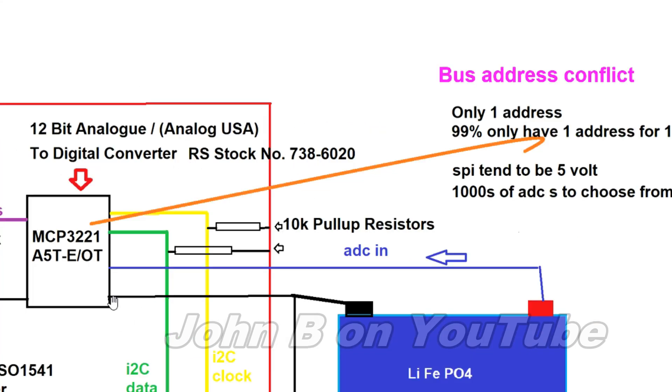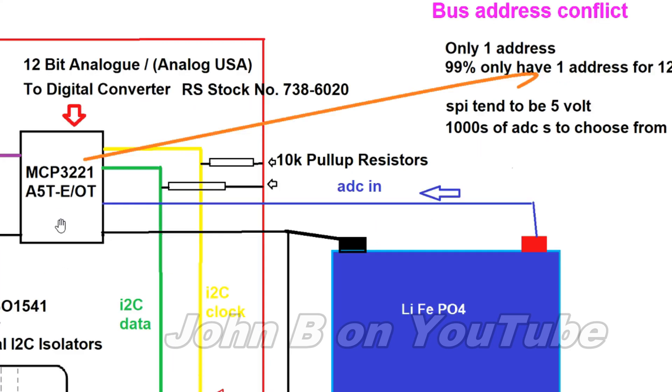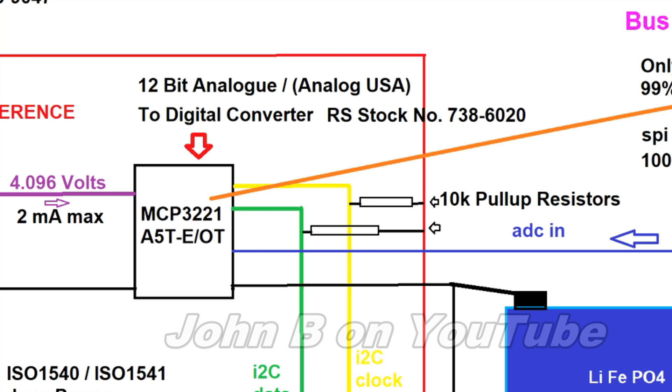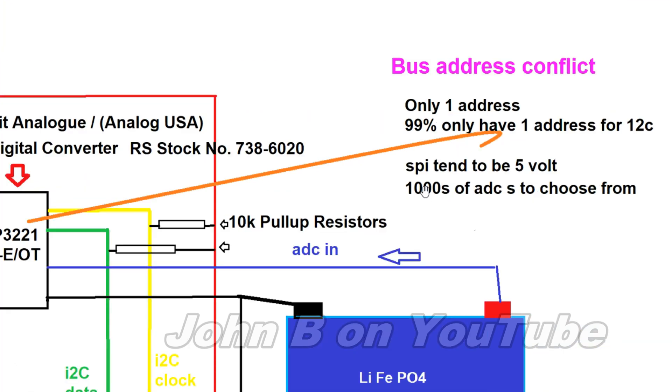This part here can deliver 2 milliamps. That goes into the 12-bit analog to digital converter. That's the RS part number, that's the Microchip part number. As I said the other day, if you want one of these on a microcontroller they are fantastic little devices. However, I wasn't happy about the bus conflict with them all having the same address. Since this ADC is running off this voltage reference at 2 milliamps, you have to change the pull-ups to 10k, and 10k is okay for 100 kilohertz communication on the I2C data and clock lines.